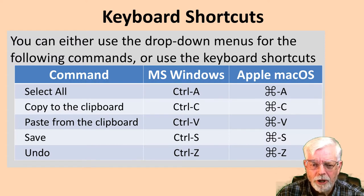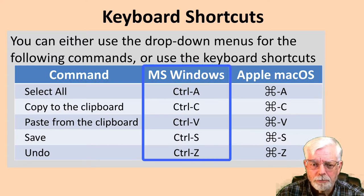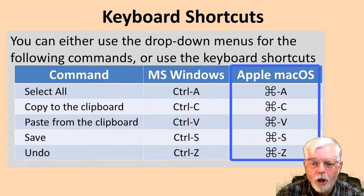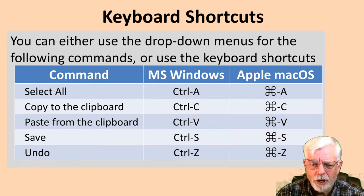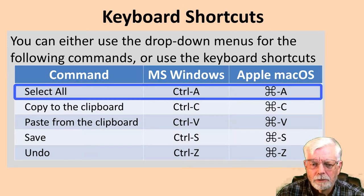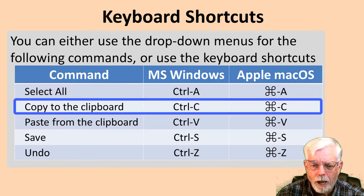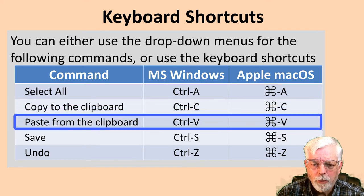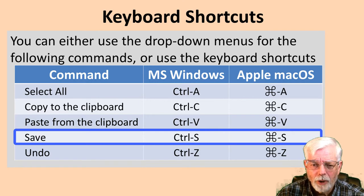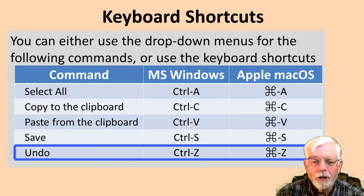Most keyboard shortcuts on Microsoft Windows use the combination of the CTRL key and another key. Although the Mac also has a CTRL key, most of its keyboard shortcuts use the CMD key. Select all is CTRL-A or CMD-A. Copy to the clipboard is CTRL-C or CMD-C. Paste from the clipboard is CTRL-V or CMD-V. Save is CTRL-S or CMD-S. Undo is CTRL-Z or CMD-Z.